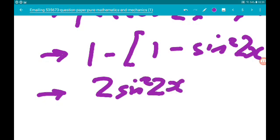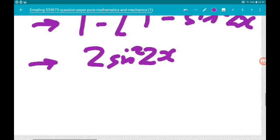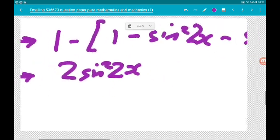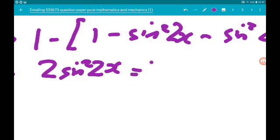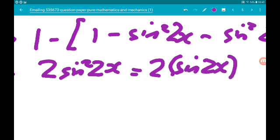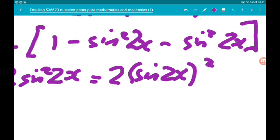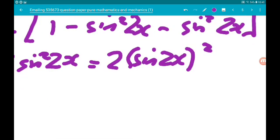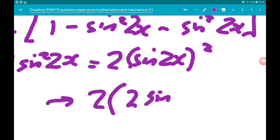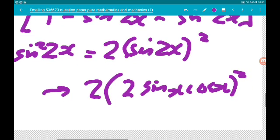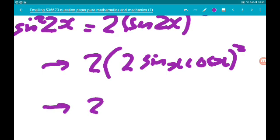Okay, so we can write that as 2 sin squared, which is 2 lots of 2 sin x cos x,